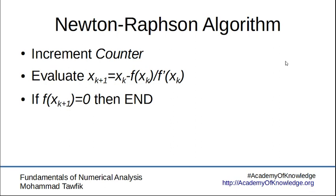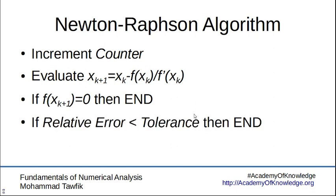Then we check if we are extremely lucky, which usually doesn't happen, that f of x k plus one is equal to zero, then we're done. We don't need to go any further. We already found the solution, but this doesn't usually happen.